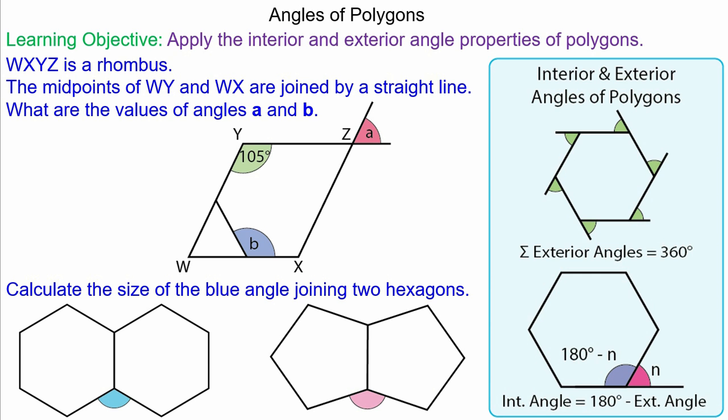We begin with this question. We know that WXYZ is a rhombus, which means YZ would be parallel to WX and WY would be parallel with XZ. This means we can apply the angle properties of parallel lines.